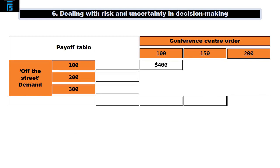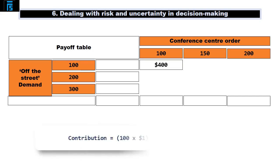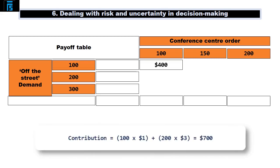Moving down to the next row, here we've agreed to sell 100 sandwiches to the conference centre and have 200 sales to off-the-street customers. This is still within Jack's capacity constraint of 350 sandwiches. This earns him a contribution of 100 × $1 plus 200 × $3, which is $700.